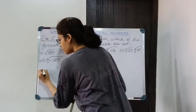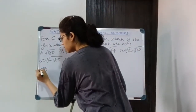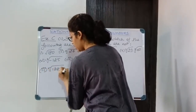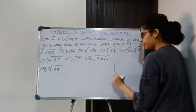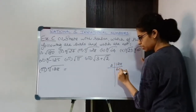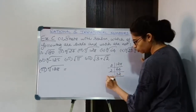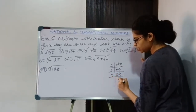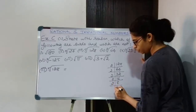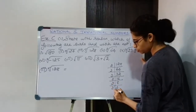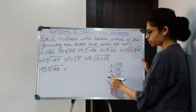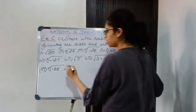Proceeding to the next number: 5th root of 128. I will factorize 128: 2 × 64, 2 × 32, 2 × 16, 2 × 8, 2 × 4, 2 × 2, 2 × 1. That gives seven 2's.